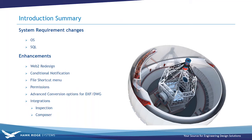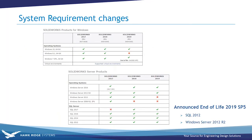Let's start with the system requirements changes. There are four things to look for. On the first table you can see that Windows 8.1 will not be supported in 2019. This doesn't come as a surprise — Microsoft already announced in 2018 that they were stopping mainstream support for Windows 8.1, so SolidWorks is retiring that operating system in 2019.